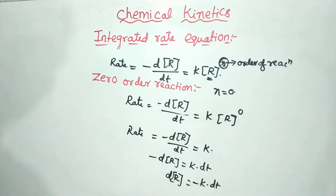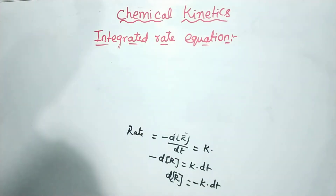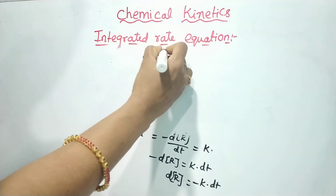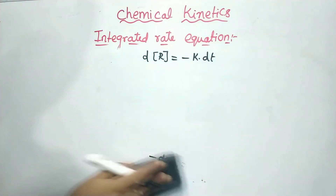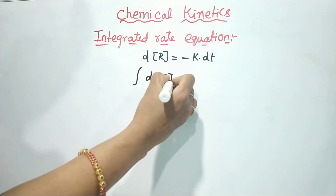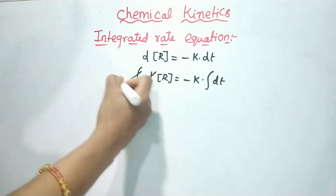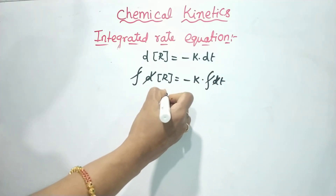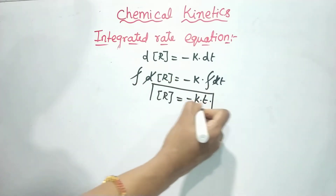Now we integrate both sides. Integrating dR = minus k·dt gives us R = minus k·t plus a constant of integration.